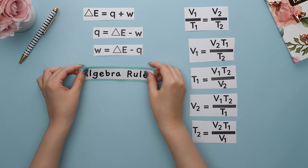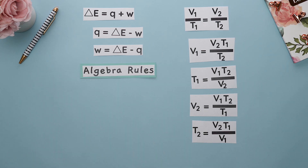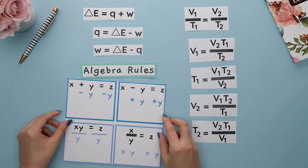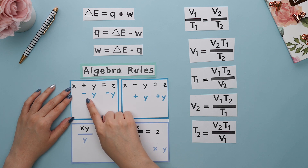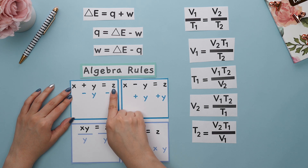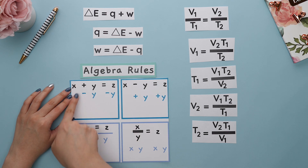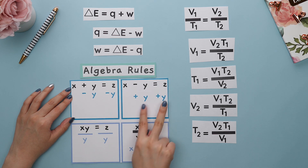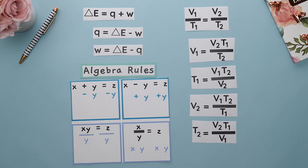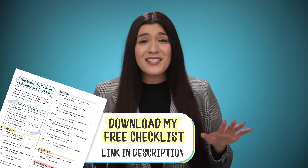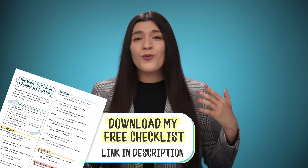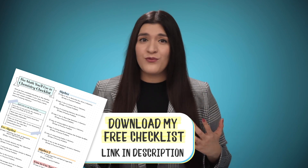To understand how to rearrange a formula, we need to review these algebra rules. When you are trying to move a variable to the opposite side of the formula, you must do the opposite operation and do this for both sides of the formula. Please stay with me and don't skip this part, because we'll be going over more complicated formulas that most students get wrong because they didn't review these rules.